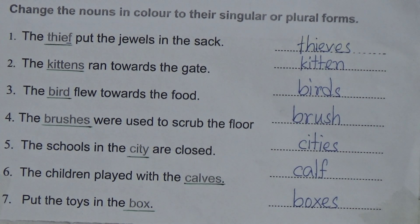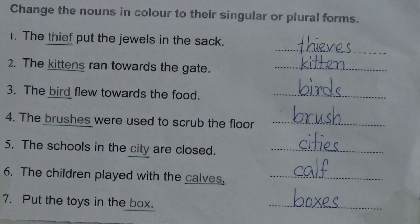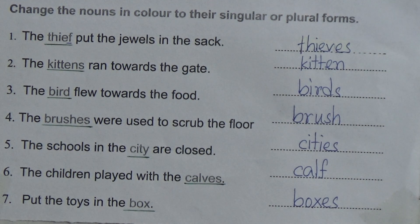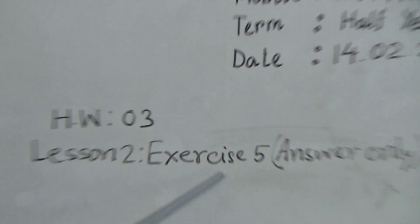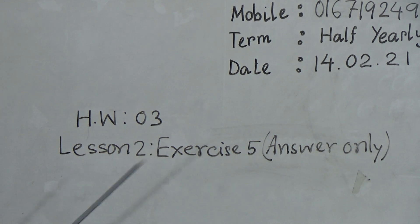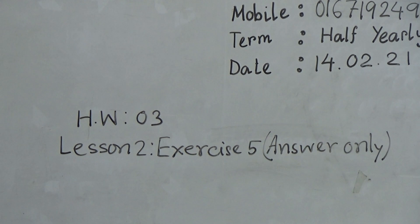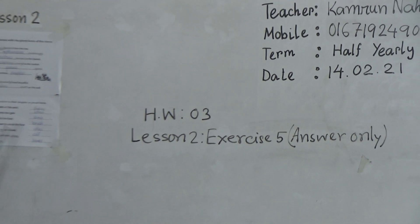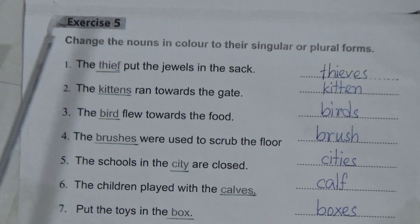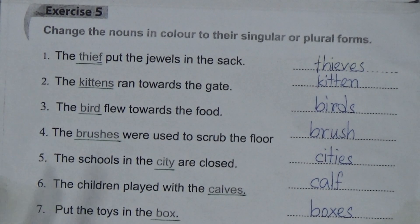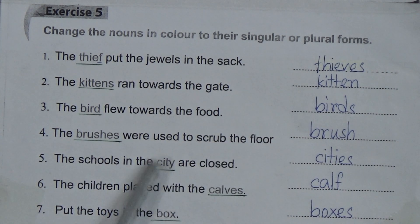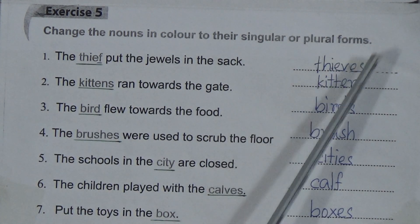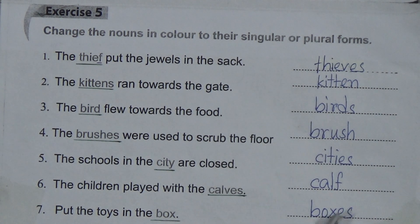Now, dear students, I am going to give you homework. You will do Exercise number 5 from Lesson 2 as your homework. You will write the answers only — not the full sentences. First write the HW number and the date, then write Lesson 2, Exercise number 5, and then write numbers one to seven with the answers only. I repeat: write the answers only, not the full sentences.